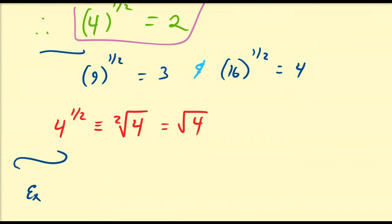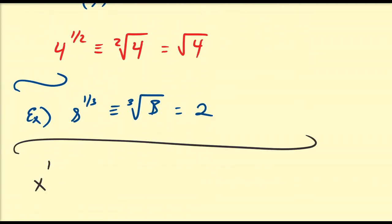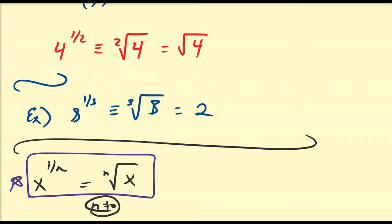So if I have something like eight to the one third, similarly I would cube both sides to get eight, making it equivalent to the cube root of eight, which equals two. One can extend these properties and show that x to the one over n is equal to the nth root of x, where n cannot be equal to zero. This is a very, very important property to memorize.